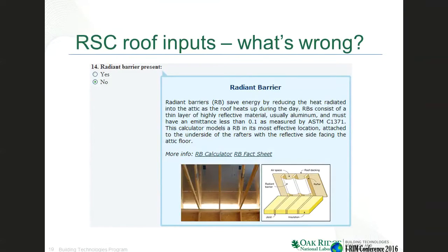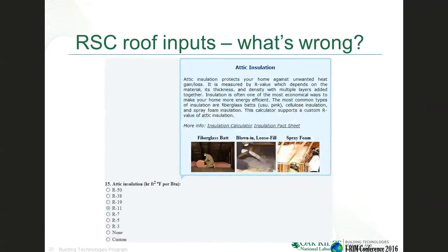We also model radiant barriers. A lot of people think of it as tinfoil with a reflective side facing outward. You drape this on the rafters — just how we model it — and as it heats up, it keeps heat from being transmitted into the roof and attic assembly. There are three ways heat is transferred: conduction, convection, and radiation. Radiant barriers help cut down the radiation component. It's one of the few technologies for doing that.